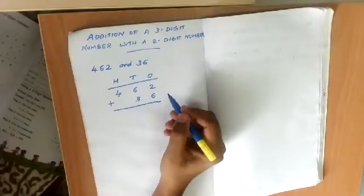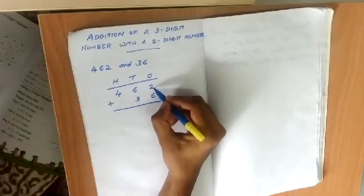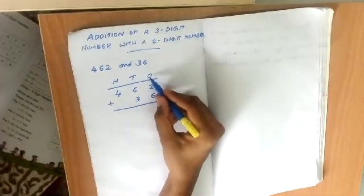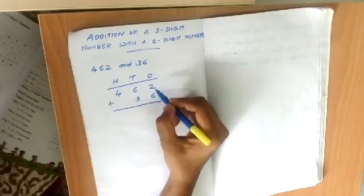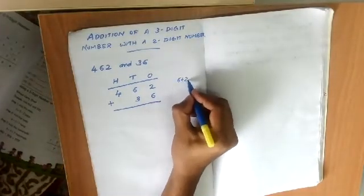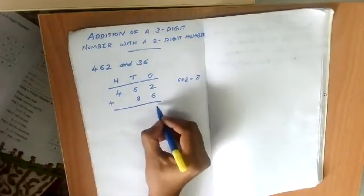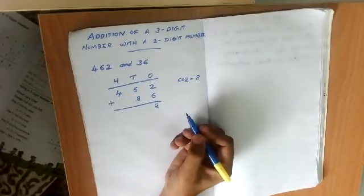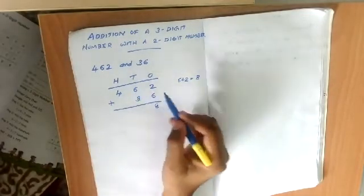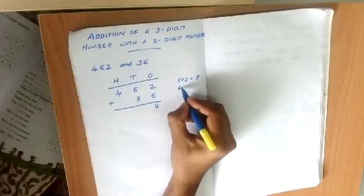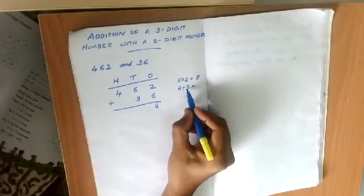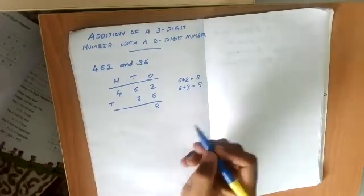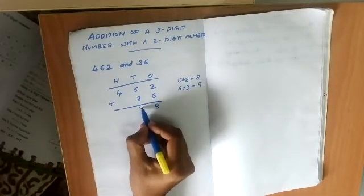Now we have to add these two numbers. First we add the digits in the ones place: 6 plus 2 is equal to 8, so we write 8 in the ones place. In the tens place there are 6 and 3, so 6 plus 3 is equal to 9, and we write 9 in the tens place.